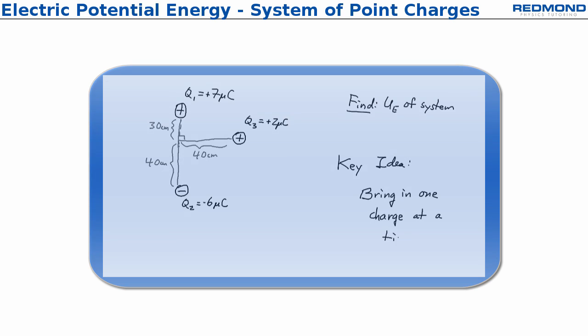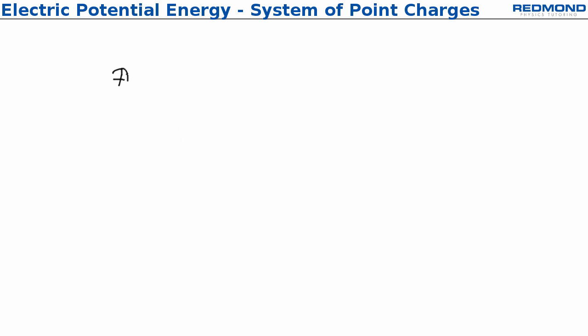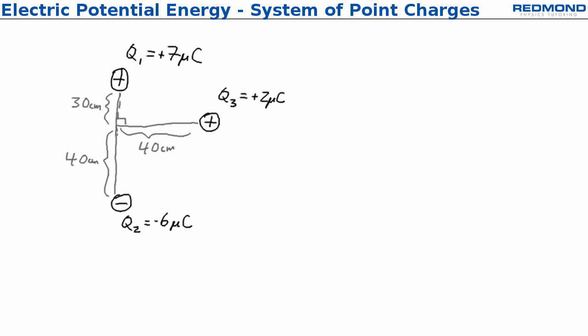We'll start with three different charges. We have a positive charge q1, down below we have a negative charge q2, and then off to the right we have q3. These are all separated by 70 centimeters between q1 and q2. q3 was connected at a point 30 centimeters down and 40 centimeters across.